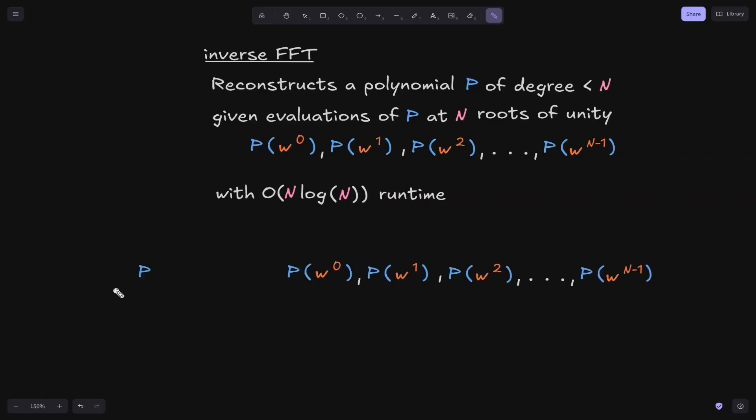So as a summary, let me draw out the relationship between a polynomial of degree less than N and the evaluation of the polynomial at the Nth roots of unity. So using FFT, we can evaluate a polynomial at the Nth roots of unity really fast, faster than simply evaluating a polynomial at these individual points one at a time.